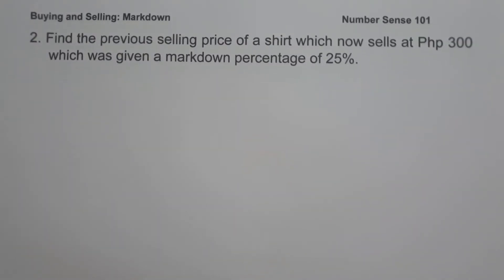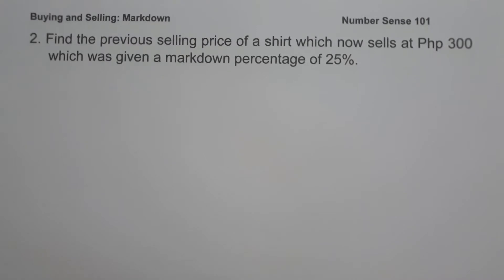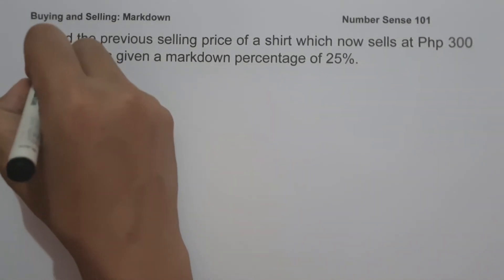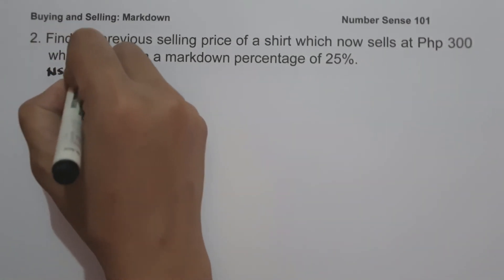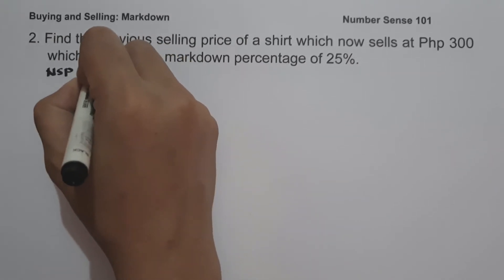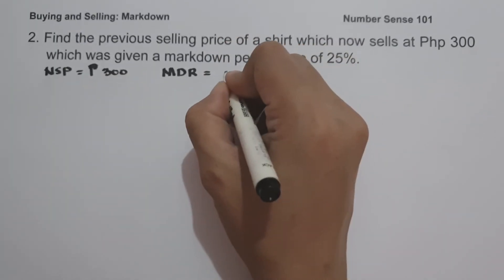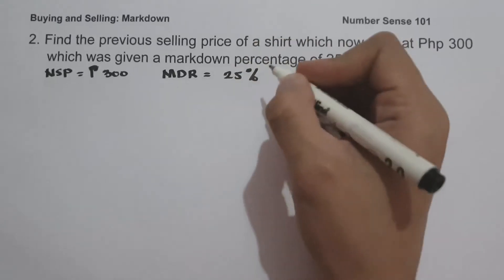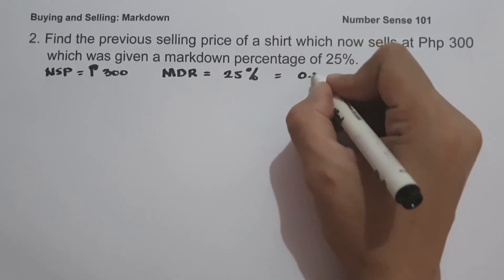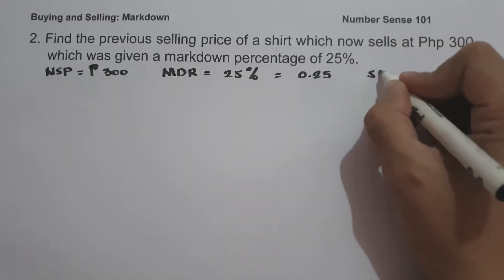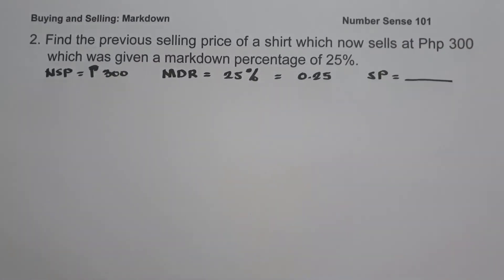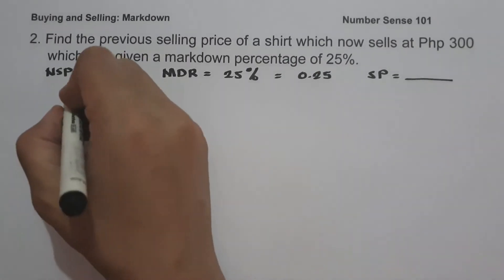On example number two: find the previous selling price of a shirt which now sells at 300 pesos and was given a markdown percentage of 25%. To determine the previous selling price, let us identify our given. The new selling price is 300 pesos, the markdown rate is 25%, or 0.25 in decimal form, and we are looking for the selling price.